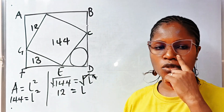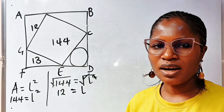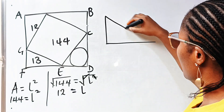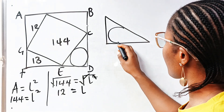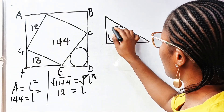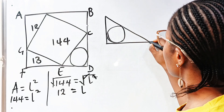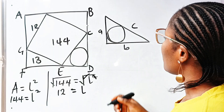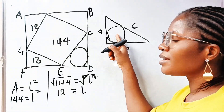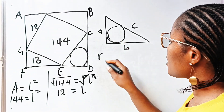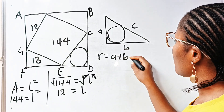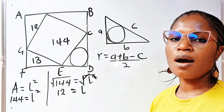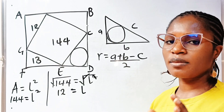Now, I want to introduce a new formula. If in a right-angled triangle you have a circle inscribed inside it, whereby this is C, this is A, and this is B, the radius of this circle is equal to A plus B minus C divided by 2.